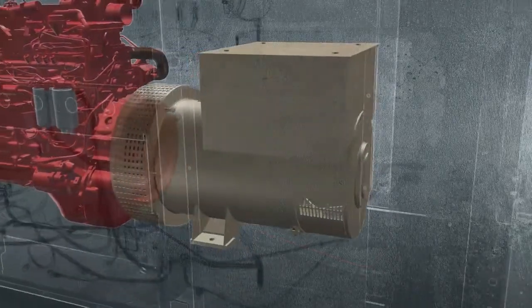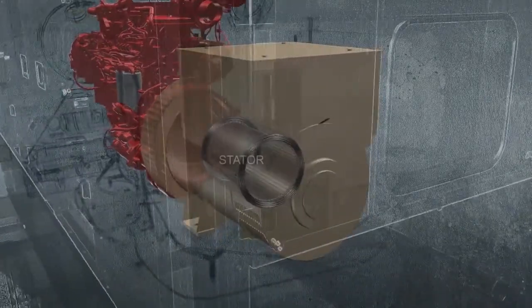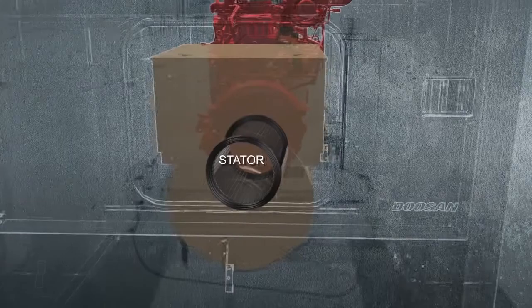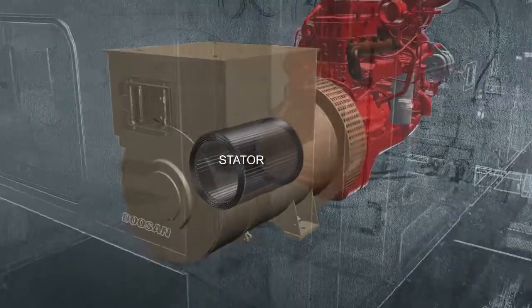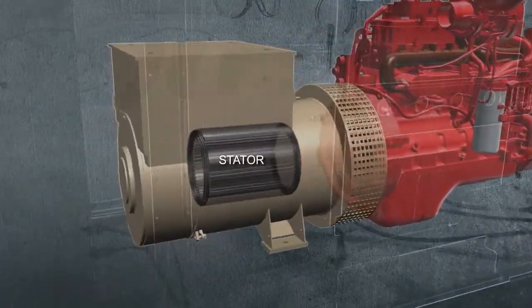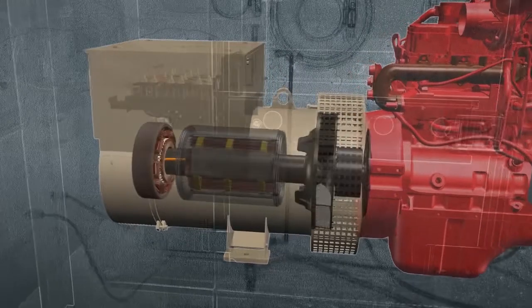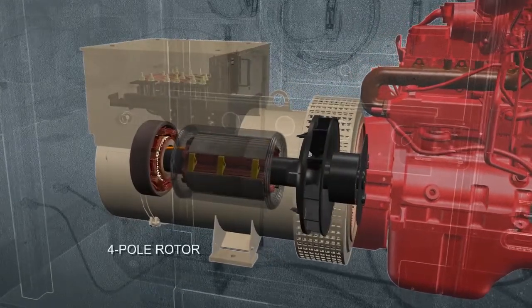Alternators include two primary parts, a stator and a rotor. The stator contains copper coils wound into the alternator's outer casing. The rotor also has wire coils wrapped around an iron core, but unlike the stator, it is attached to the engine crankshaft so it rotates with the engine.